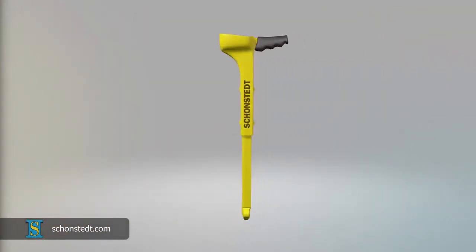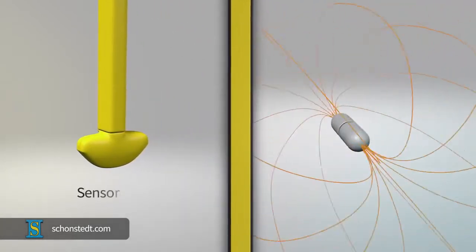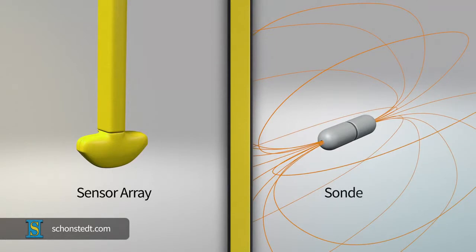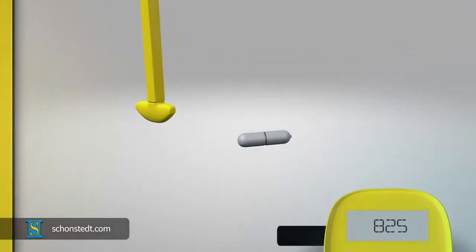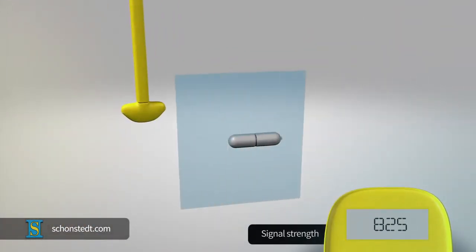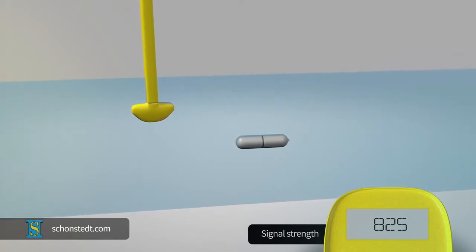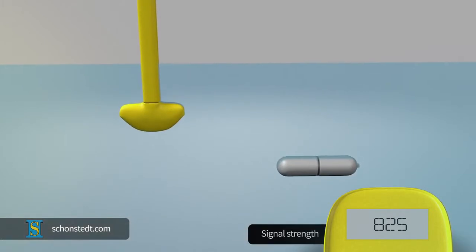In order to understand the techniques for approaching and pinpointing, it is important to understand the relationship between the orientation of the receiver sensor array and the sonde. The signal detected by the sensor array is strongest or peak when the axis of the sonde and the axis of the sensors in the receiver are on the same plane.